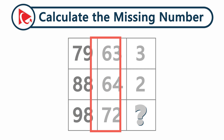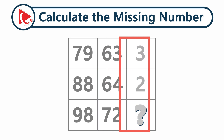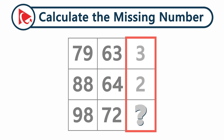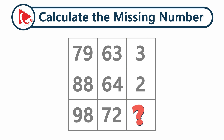The second column has numbers 63, 64, and 72. And the third column has only two numbers, 3 and 2. Then comes the missing number in the bottom right corner, which you need to calculate and select out of four possible choices.